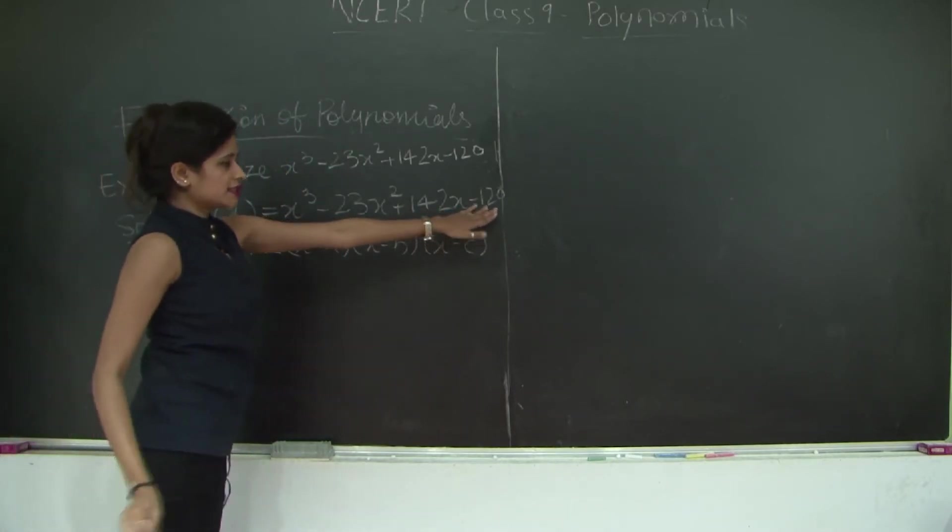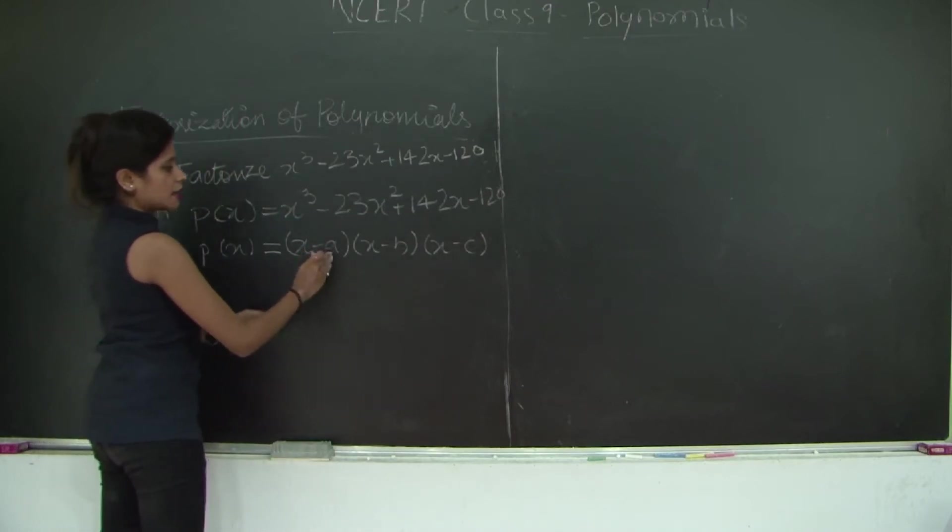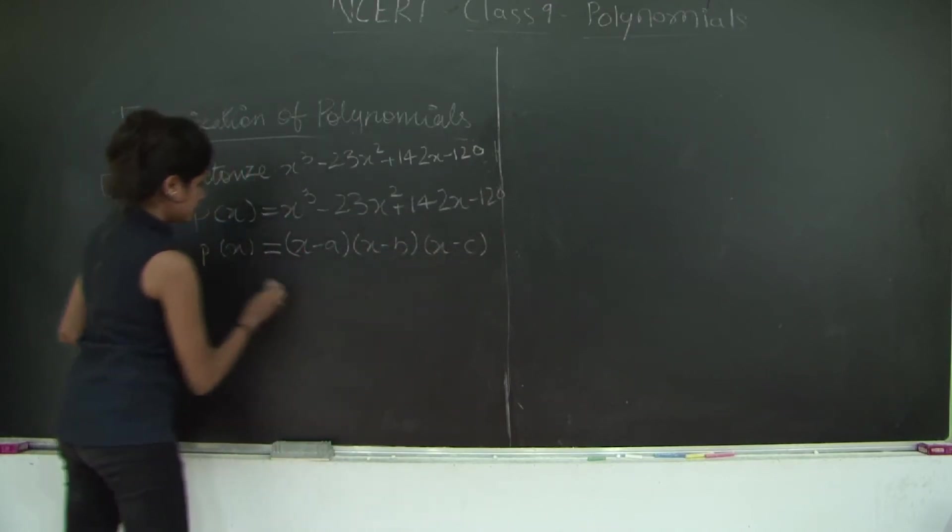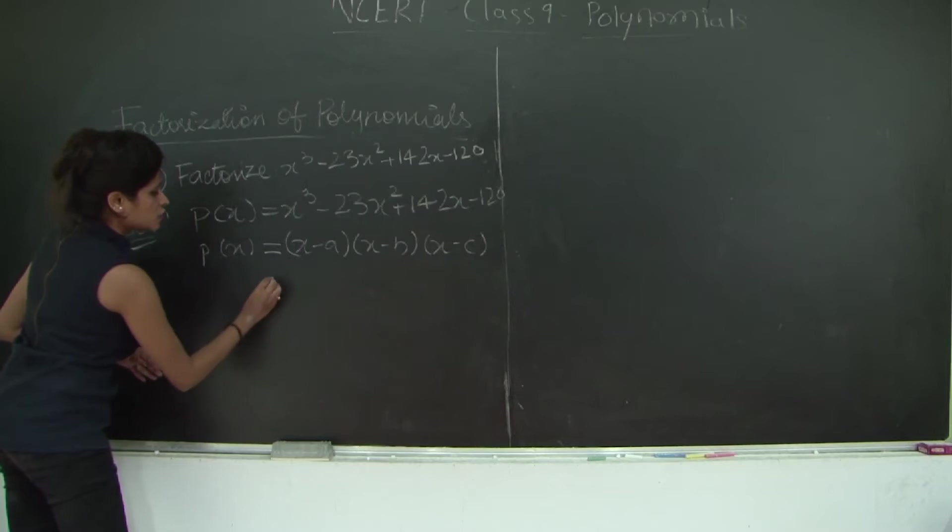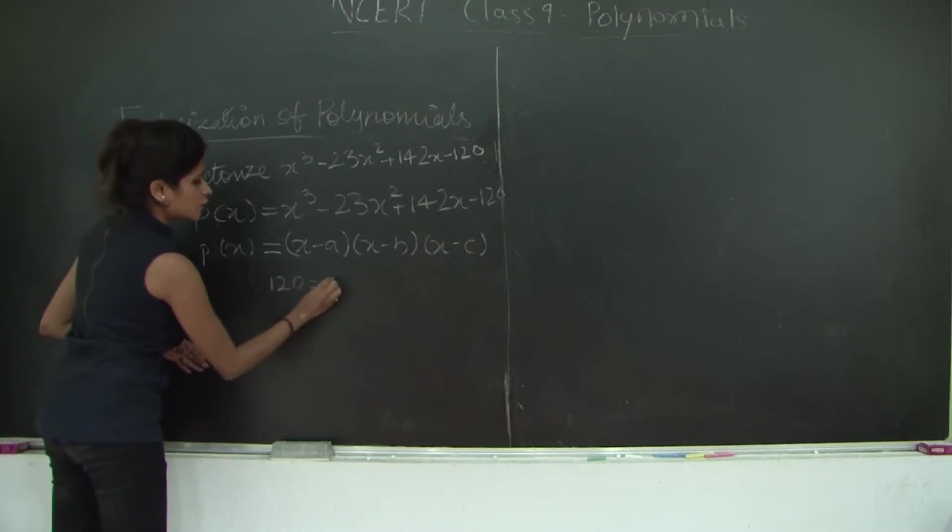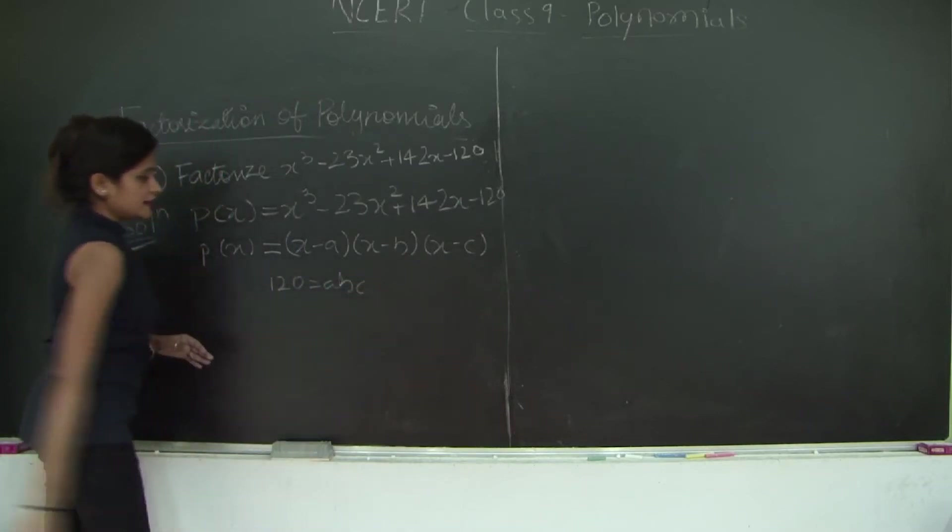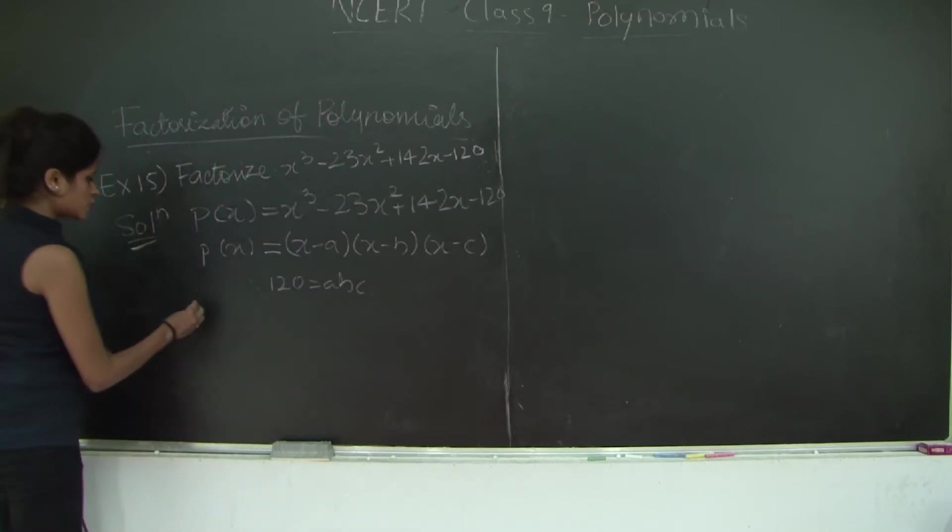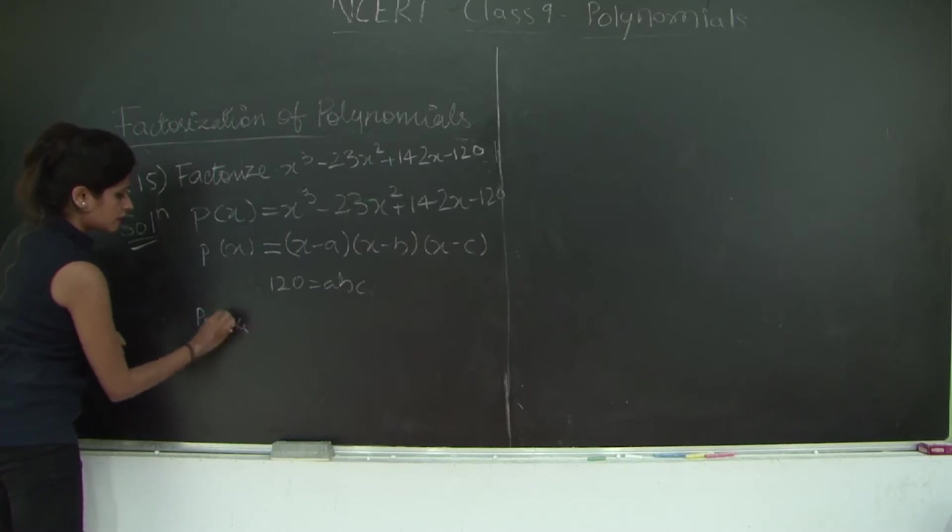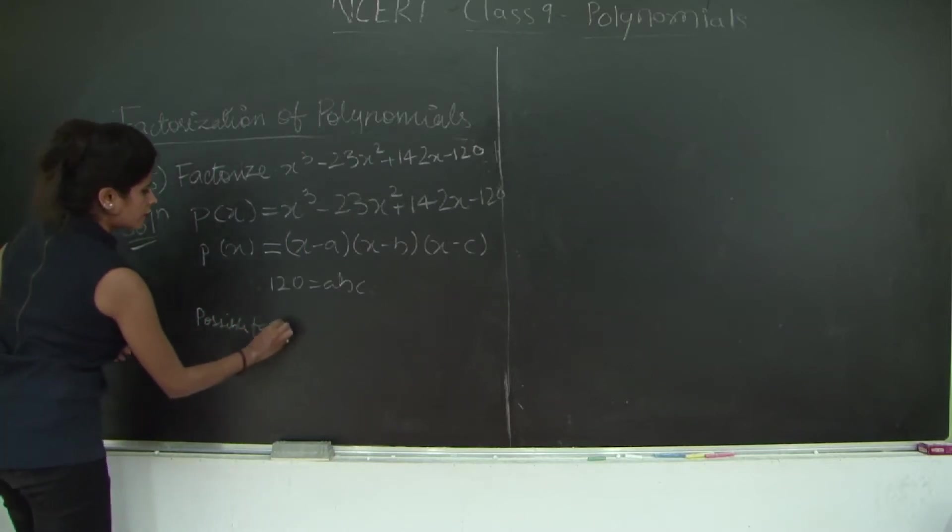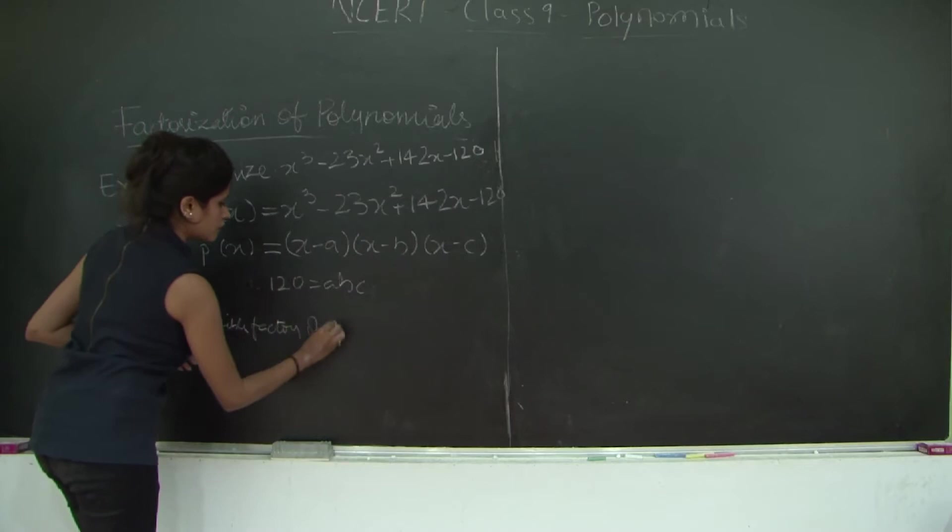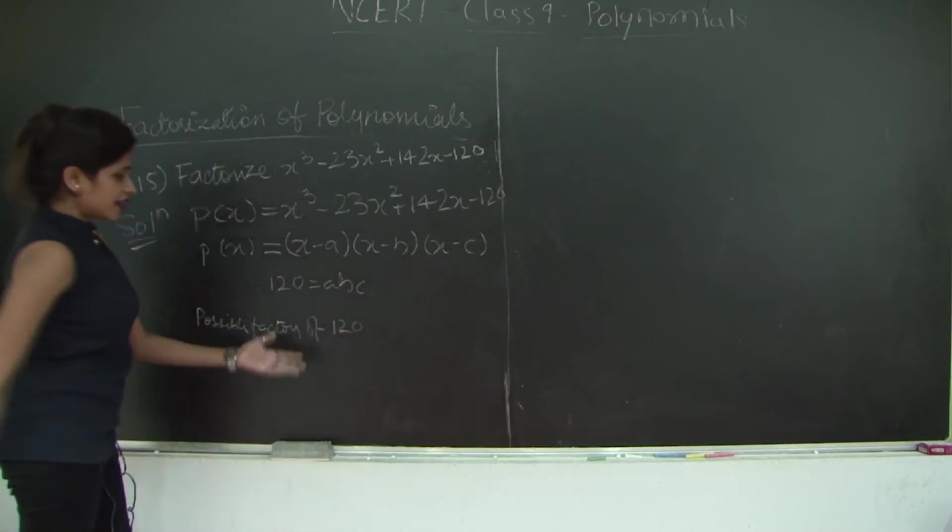Obviously, the constant term is nothing but the product of a, b, and c. Therefore, 120 = abc. Now we need to find the possible factors of 120.